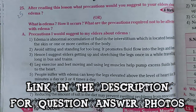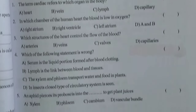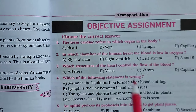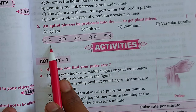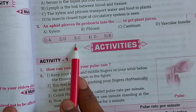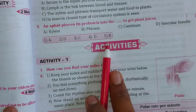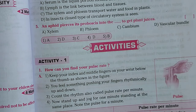Let's move to the 'Choose the Correct Answer' questions. You can see like this we have the five questions. Now we will see the answers — first one is A, second one is D, third one is C, fourth one is D, fifth one is B.